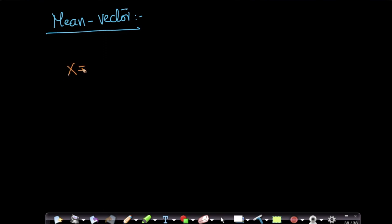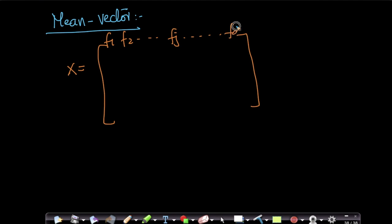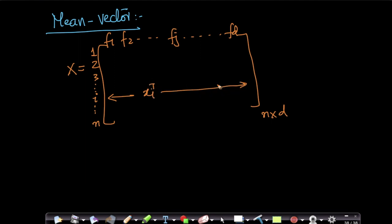Let's assume we are given a data matrix where each column is a feature — f1, f2, and so forth up to fj and fd — and each row corresponds to the ith data point, up to n. This is an n×d matrix, and the ith data point is xᵢ transpose. The jth column corresponds to the jth feature. This is our standard practice of representing a data matrix.